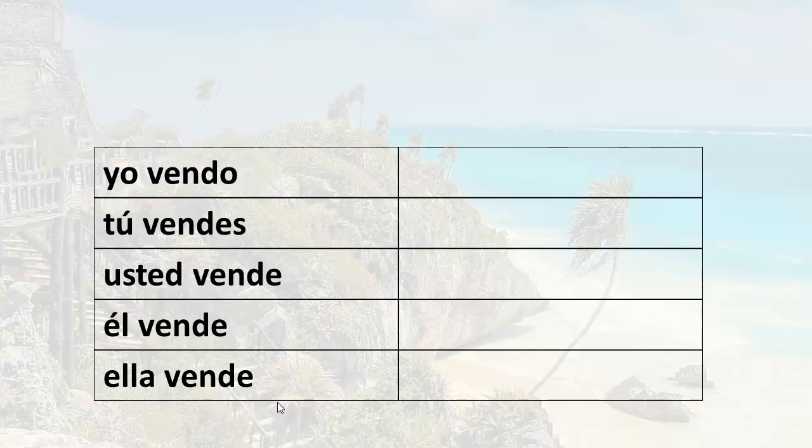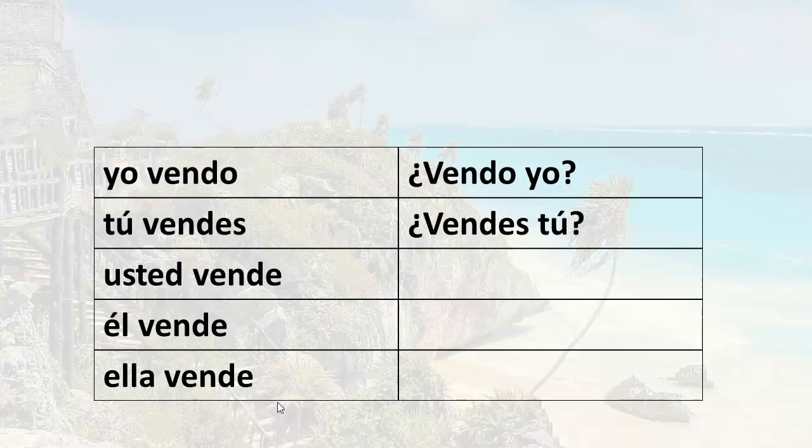So for example, yo vendo becomes vendo yo. Yo vendo means I sell; vendo yo means am I selling or do I sell? Tú vendes means you sell. To make that a question, you would say vendes tú — do you sell?